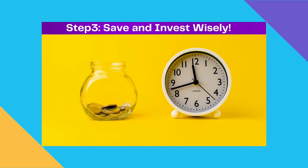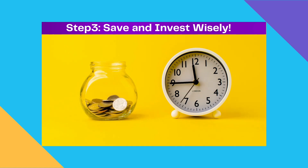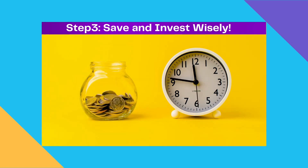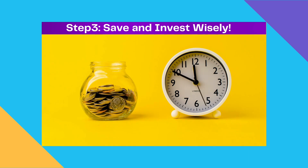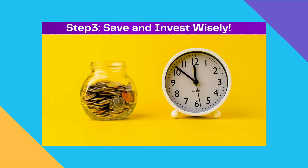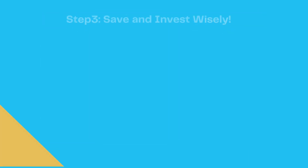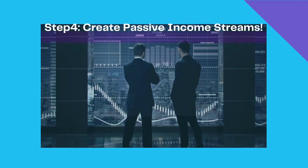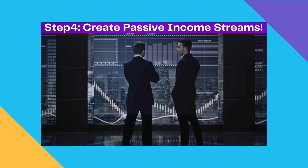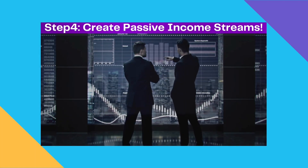Step three: save and invest wisely. Start saving a portion of your income and invest it wisely in assets that can generate passive income. Compound interest and regular contributions can work wonders over time. Step four: create passive income streams.